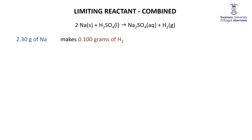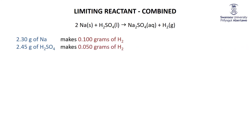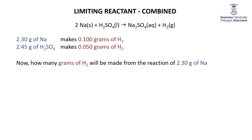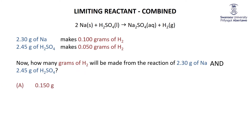To summarize: 2.3 grams of Na made 0.1 grams of H2, and 2.45 grams of H2SO4 made 0.05 grams of H2. What would happen if we reacted both — 2.3 grams of sodium and 2.45 grams of H2SO4 together? Would we make 0.15 grams (adding both), 0.1 grams (the bigger amount), or 0.05 grams (the smaller amount)?